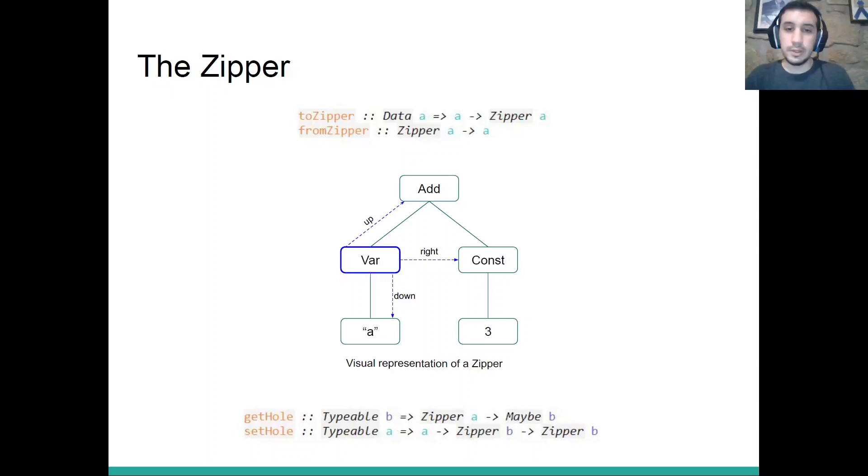To combine these two techniques, one thing that we need is a common denominator. In this case, it's the zipper. The zipper is a data structure that we build from another data structure, and it allows us to traverse the original data structure in a controlled way. Here we have two functions that we can use to create a zipper, toZipper, and we can use fromZipper to recover the original data. And here we have an example. For example, this could be a parse tree from a parser, or it could represent some language.